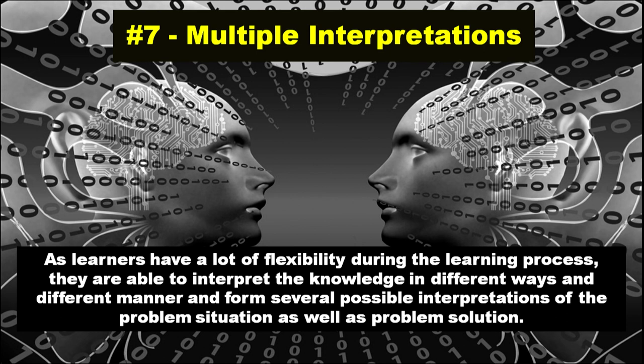Principle number seven is multiple interpretation. As a learner has a lot of flexibility during the learning process, they are able to interpret knowledge in different ways and form several possible interpretations of the problem situation as well as problem solutions. Students can collectively construct various interpretations for a natural phenomenon, and together evaluate these views to decide which one is most useful and meaningful in explaining the phenomenon in a particular context.